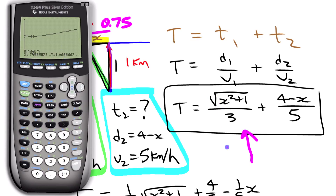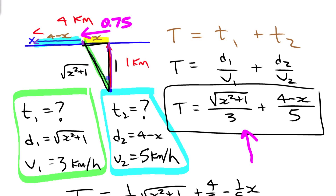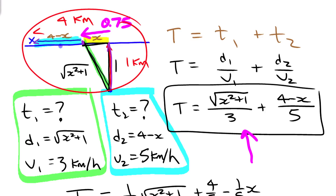Now, in reality you're not going to go through all this just to save yourself a few minutes — figuring it out takes longer than the difference would cost you on the shore. But conceptually it's important to understand that you can use calculus to find that minimum value, and that travel time varies depending on where you land on the shore. Hope you learned something!